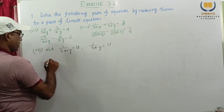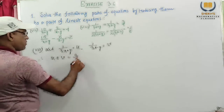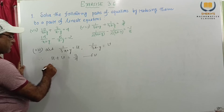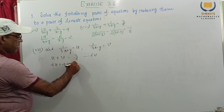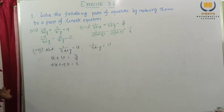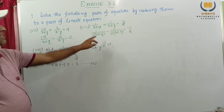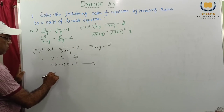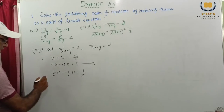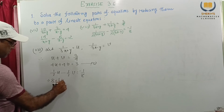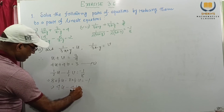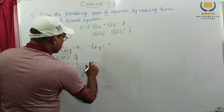Multiplying equation 1 by 4, then 4u plus 4v equal to 3 — this is number 1. Multiplying equation 2 by 8: 8 into 1 by 2 u minus 8 into 1 by 2 v equal to minus 1, so 4u minus 4v equal to minus 1. This is number 2. Now what we get: this is 4u and this is 4u; 4v and minus 4v. Just if we add these two, v and v cancel. We get 8u, and 3 plus minus 1 is 2. So u equal to 2 by 8, this is 1 by 4. We get the value of u is 1 by 4.